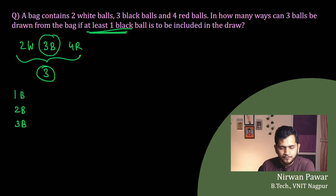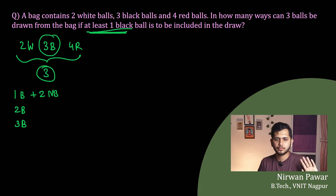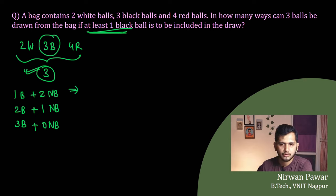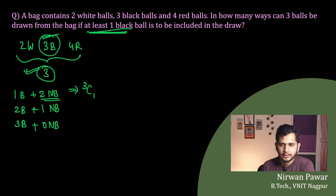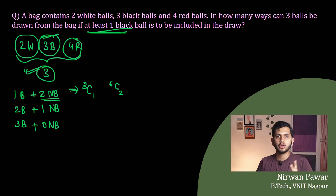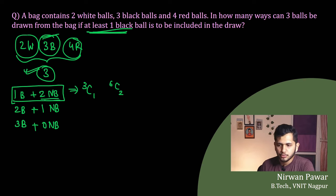I have to select a total of three balls. Case 1: select one black ball, then two non-black balls remain to be chosen. The total non-black balls are two white plus four red, which is six. So the number of ways for Case 1 is 3C1 into 6C2 — since I need both black and non-black balls, it is multiplication.